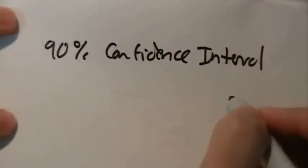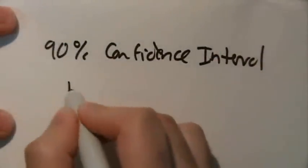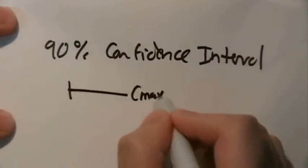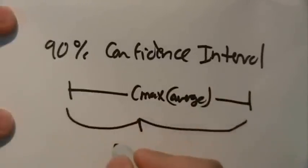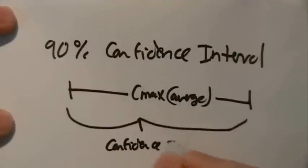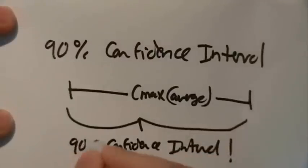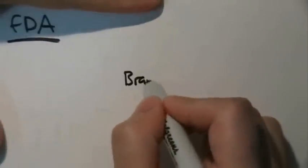So the 90% confidence interval gives us a range, which if you were to repeat the same experiment yourself, there's a 90% chance the average Cmax and AUC you'll get will lie within this range.